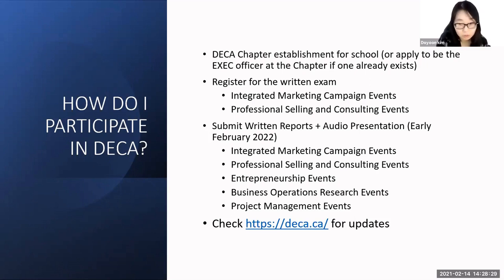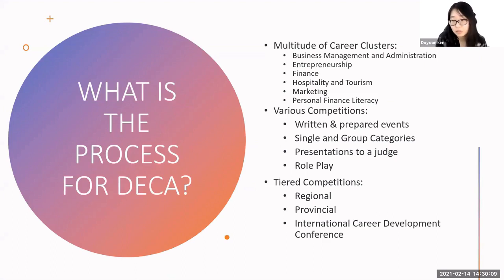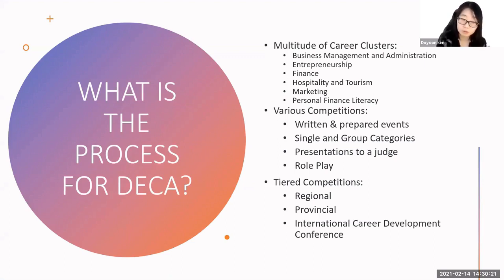Next year, early February 2022 will be the deadline. DECA has just finished this year's regional competition, so if you are interested, please check the DECA website for updates on next year's schedule. For the process to participate in DECA, you must first choose between six career clusters. You can choose which one you find most interesting, have previous background knowledge in, or depending on the courses you have taken in high school. The DECA website also provides a set of questionnaires to help identify which career cluster and type of event you'll fit well with if you're not sure.